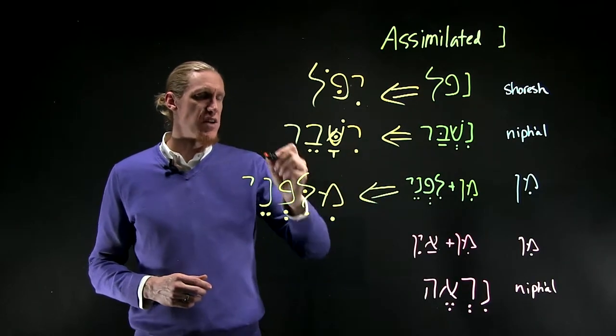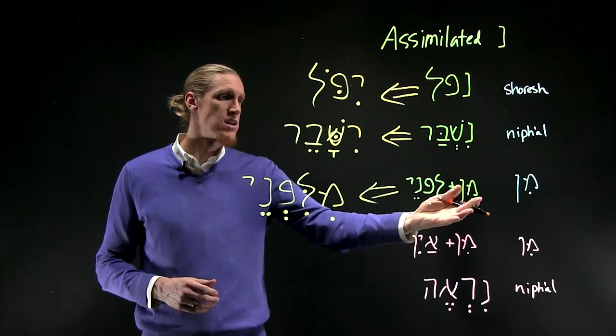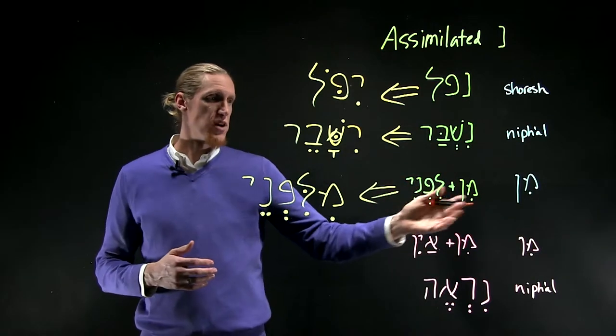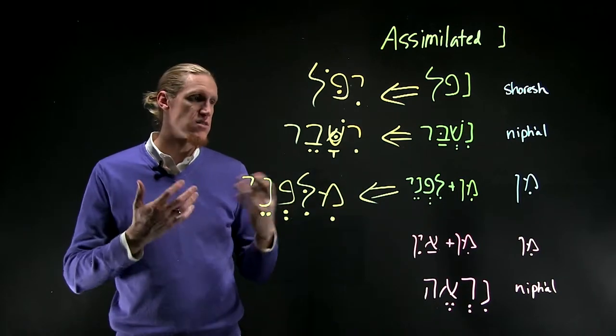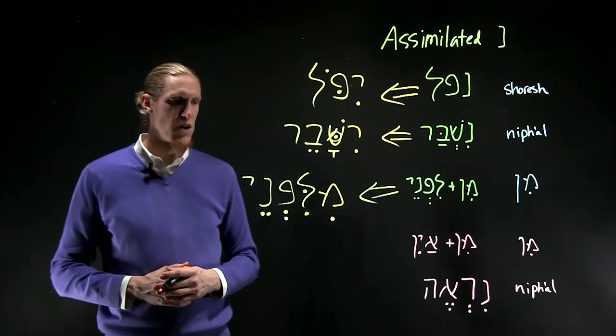And yishaver is he or it will be broken to pieces. And here, min is away or from, lifnay is to the face or presence. Me-lifnay is away from the presence.